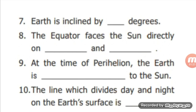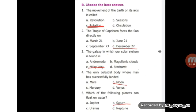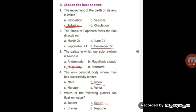Next, the line which divides day and night on the earth's surface is dash. Answer: The line which divides day and night on the earth's surface is the terminator line. Next, choose the correct answer. Answer: First one.